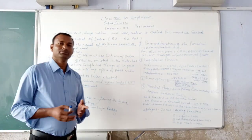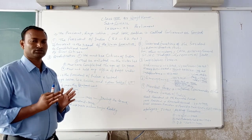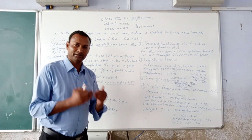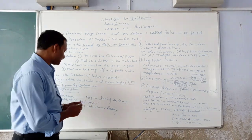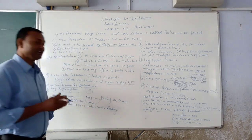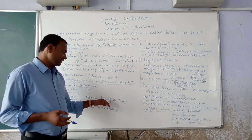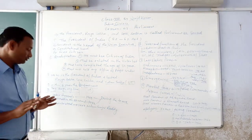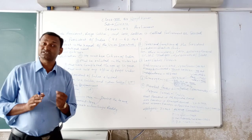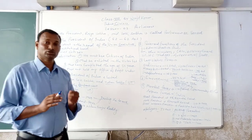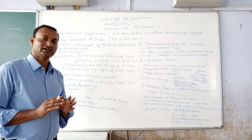Third: Impeachment. Impeachment is called Mahabhiyog in Hindi. Parliament can remove the President by a one-third majority by passing a bill in both Lok Sabha and Rajya Sabha. Fourteen days' notice must be given before initiating impeachment. Notably, Neelam Sanjiva Reddy in 1977 was elected uncontested — no other candidate stood against them for the presidency.